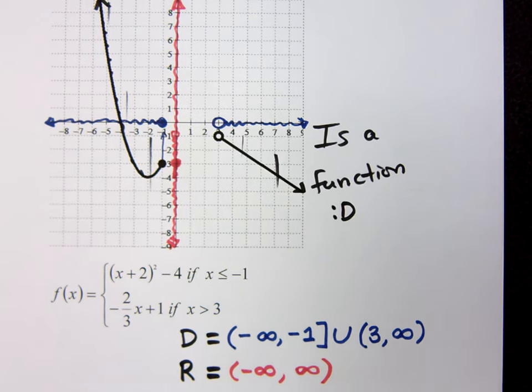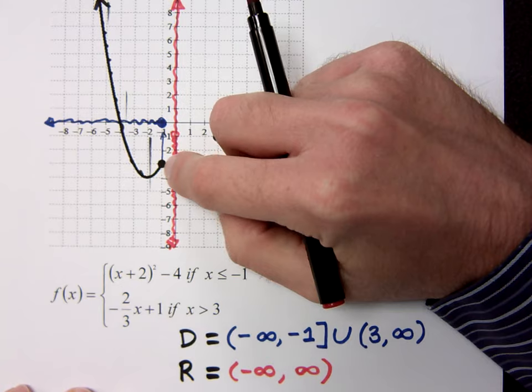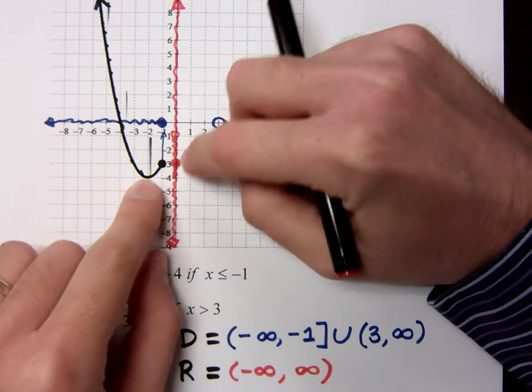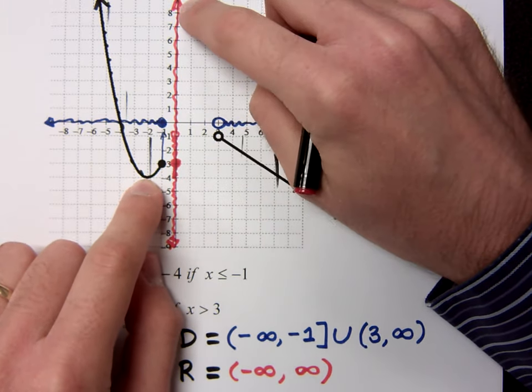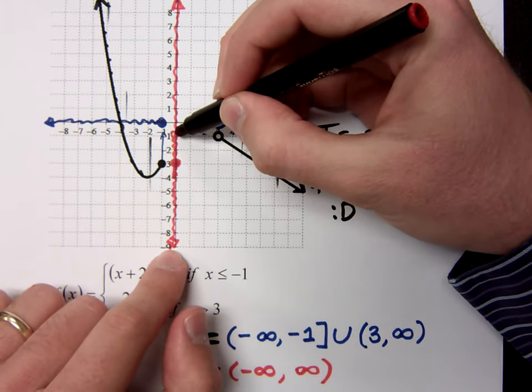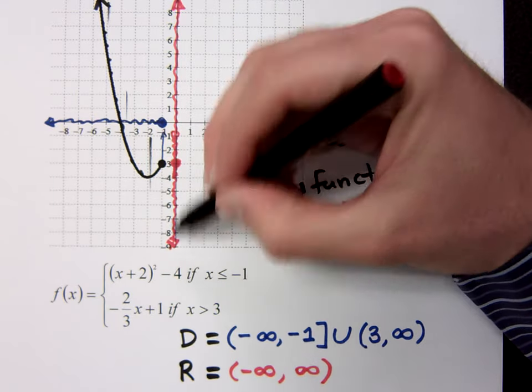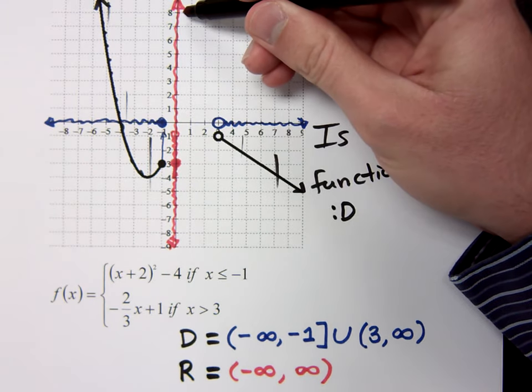It's going to take every single Y value to make up this picture. This guy is going to require you to use from negative 4 to infinity. This guy requires you to use from negative infinity to negative 1. But when you put them together, when you join them together, that's everything. Oh, I see. It's everything.